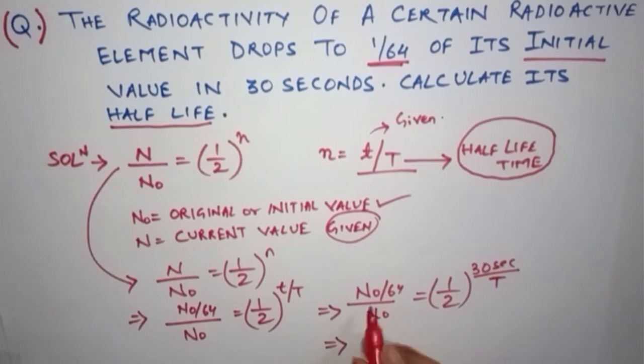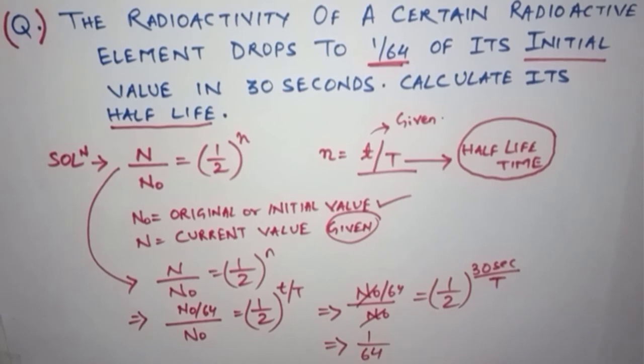So now what we will do in the next step: we can cancel this N₀ by N₀. Then what remains is 1/64, which is equal to (1/2) to the power 30 by capital T.